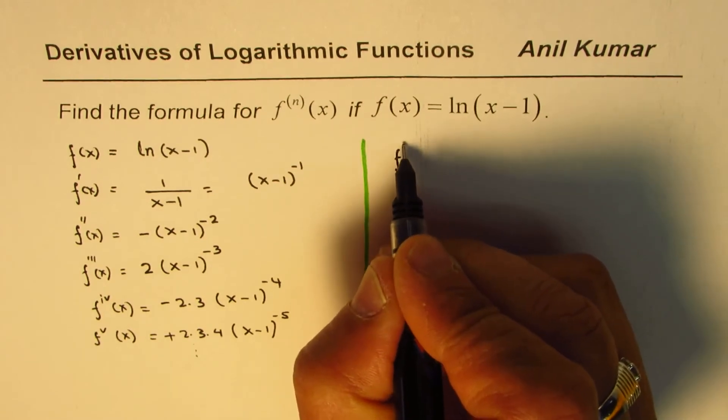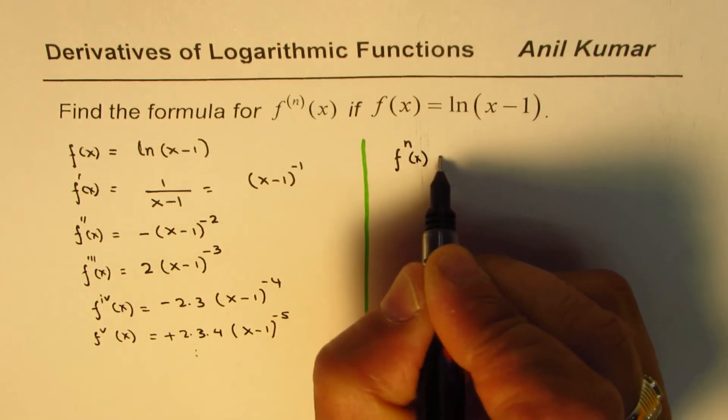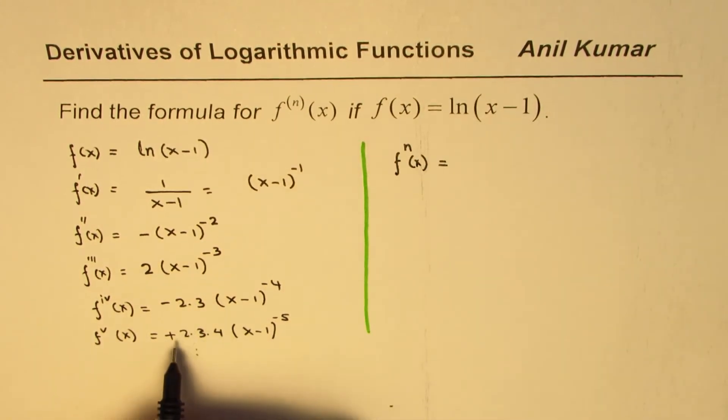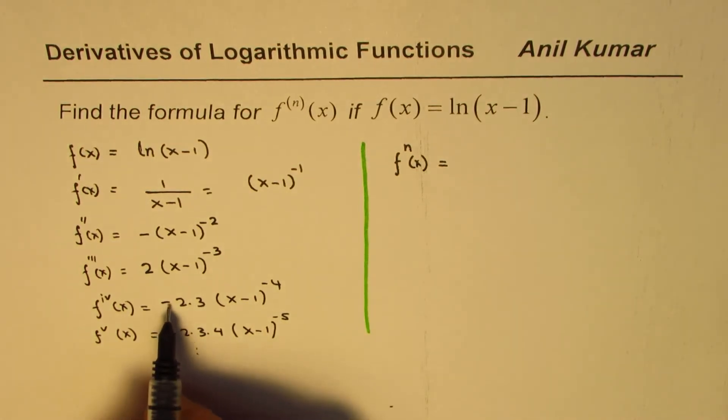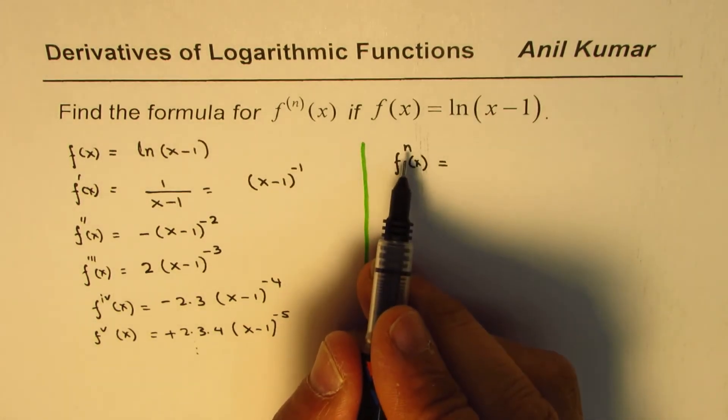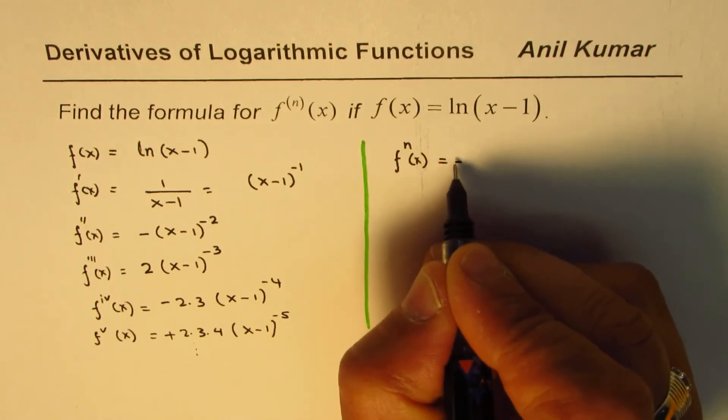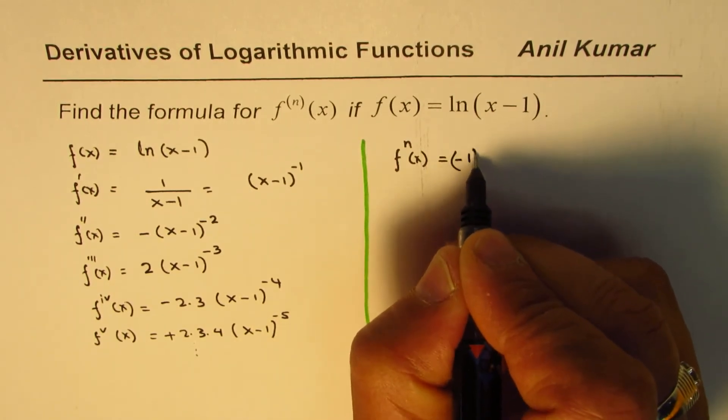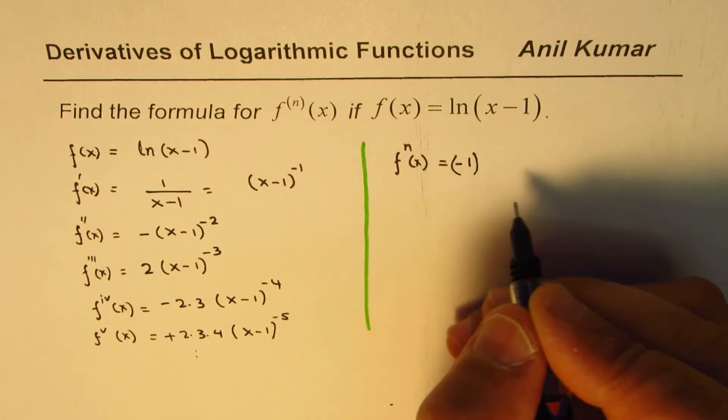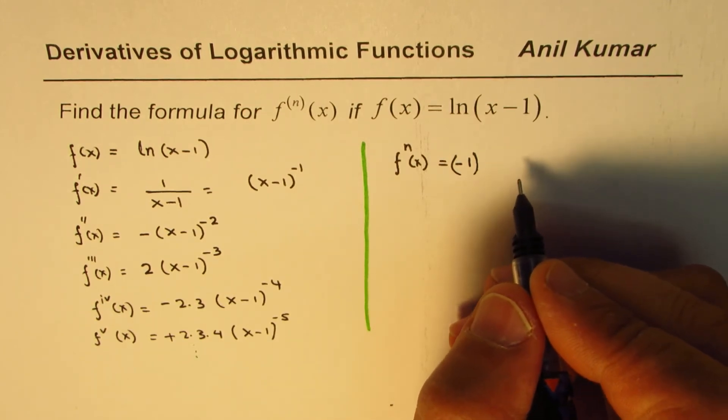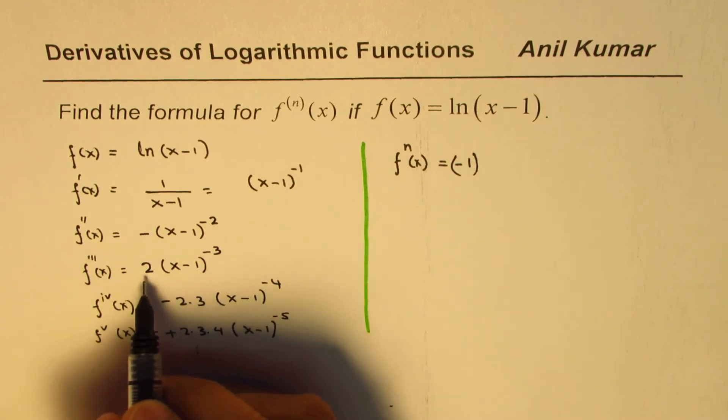So we can say f^(n)(x), where n is the derivative. It could be negative or positive. It is negative when the nth derivative is even, and it is positive for odd numbers.